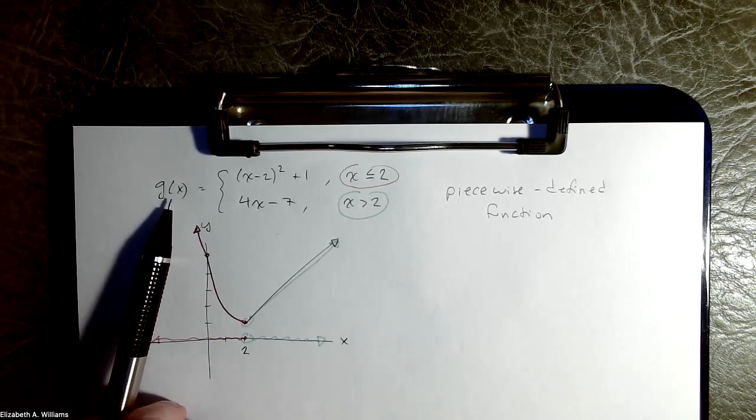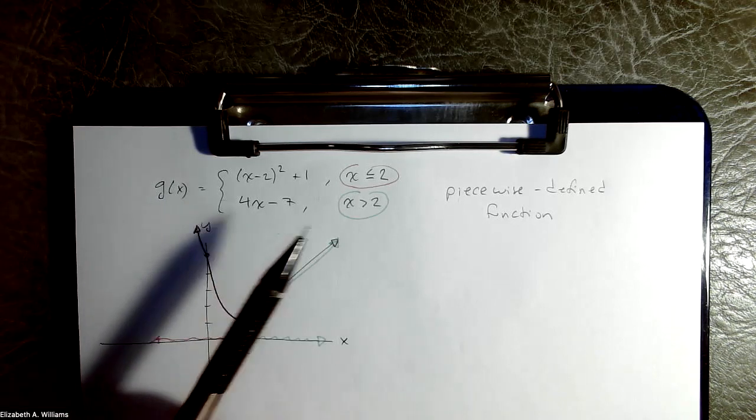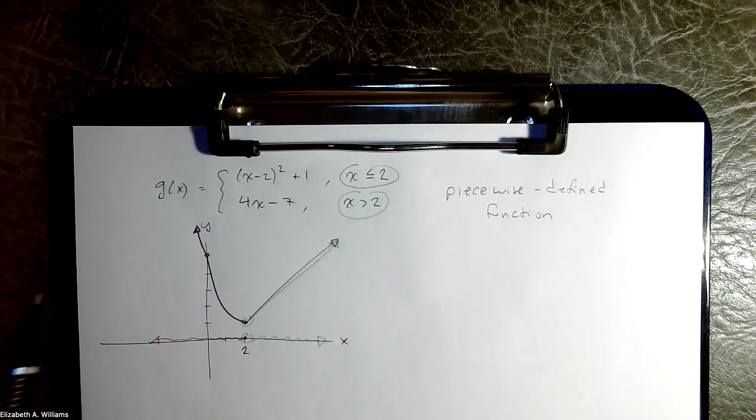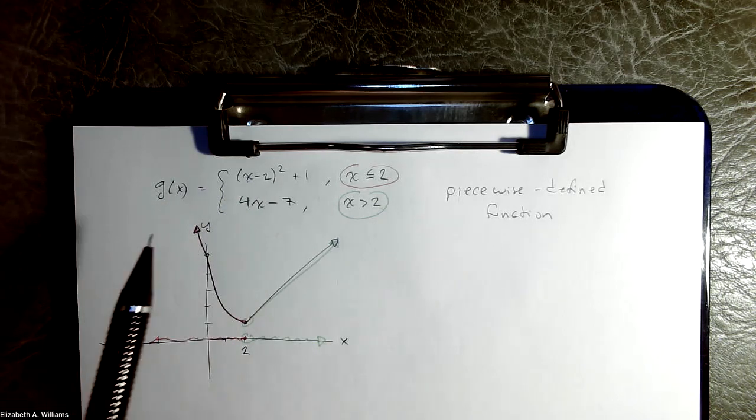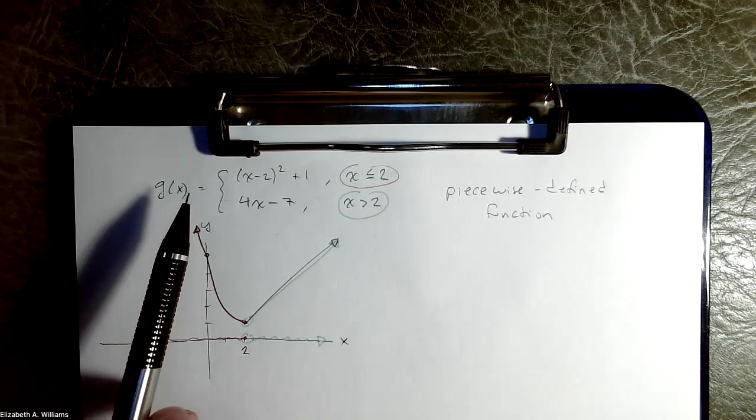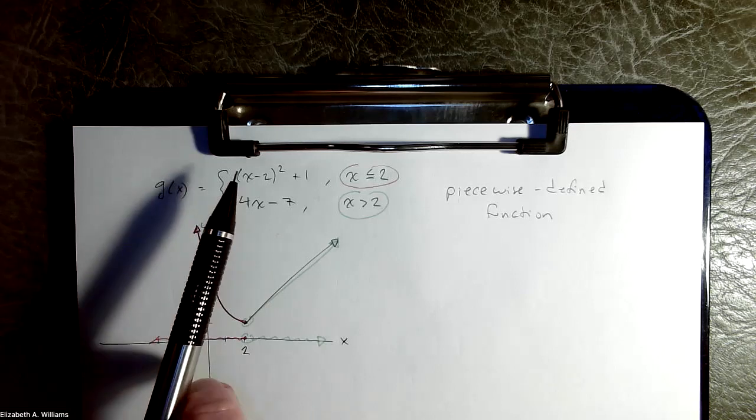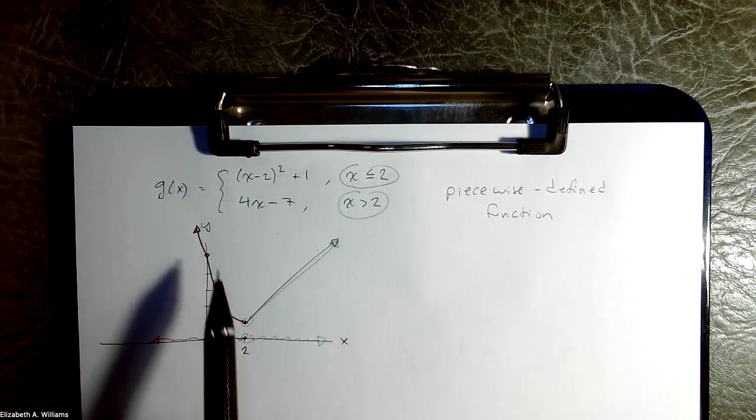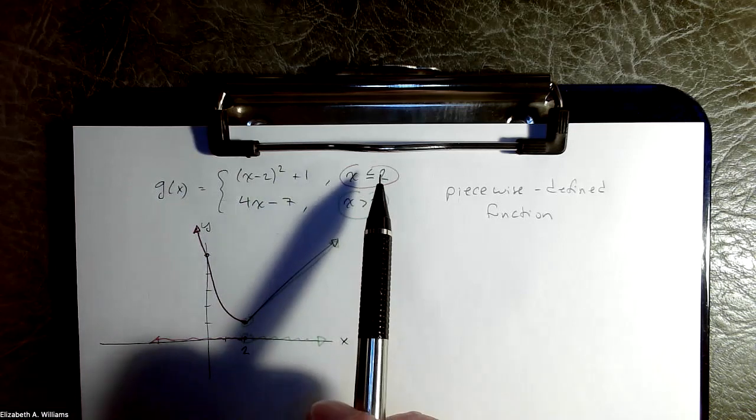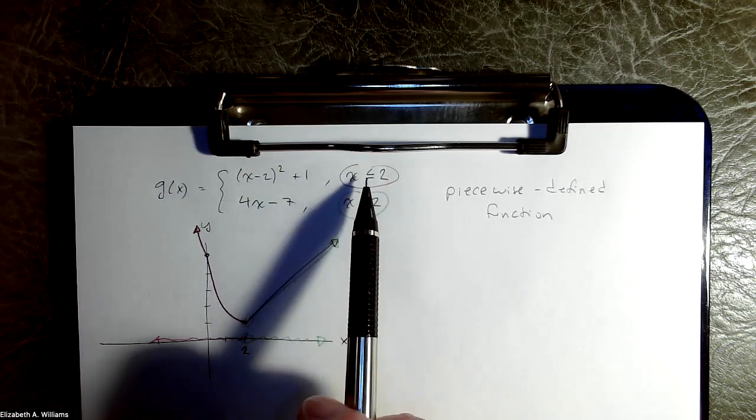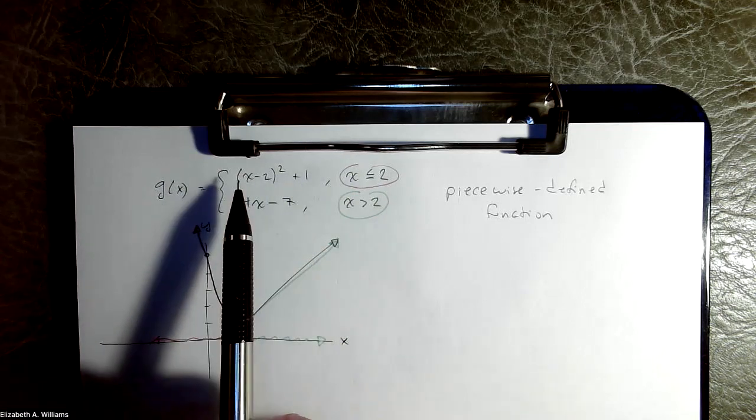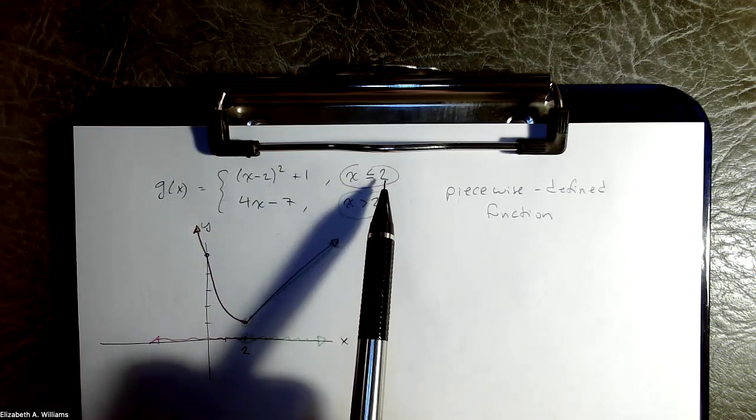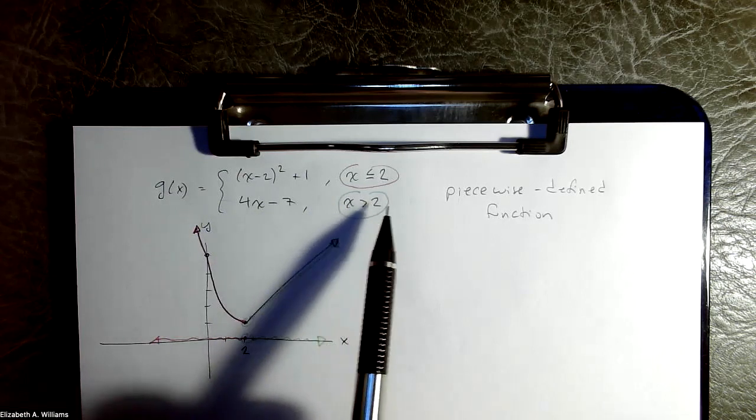So here was the G of x function that we were given. It is called a piecewise function or a piecewise defined function because it's defined in pieces. This particular function G of x is defined in two distinct pieces. Here's the picture of it and this tells you what values of x to use which rule for. So it says use this rule for x's that are less than or equal to two, use this other rule for anybody bigger than two.